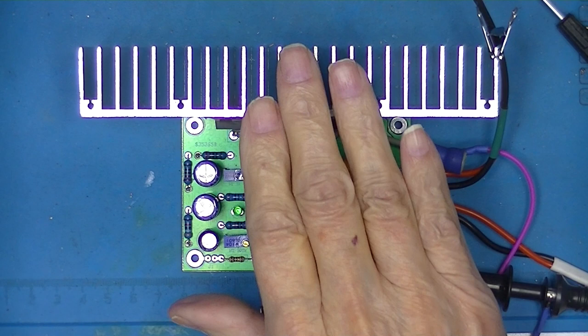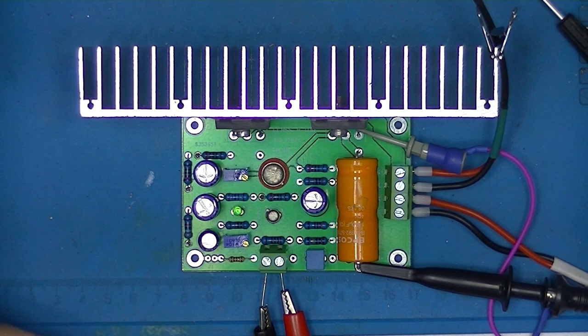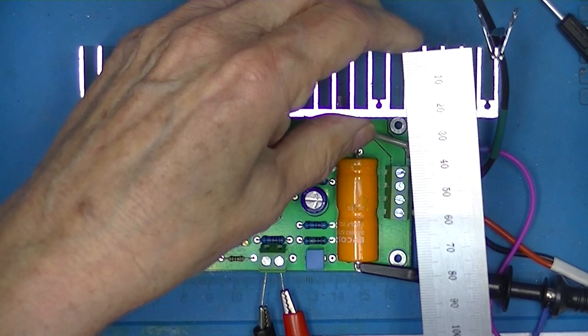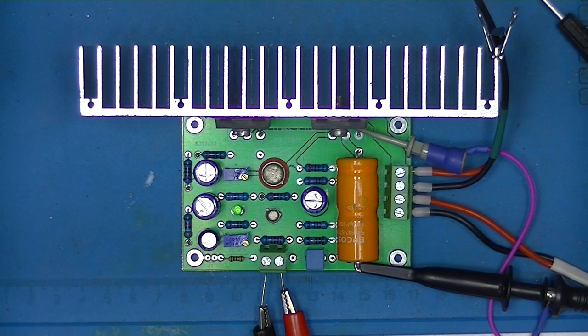The heatsink is available on eBay or Ali. It's a very common heatsink. I think it costs around five dollars but don't trust my memory. It's 150 by 60 by 25.